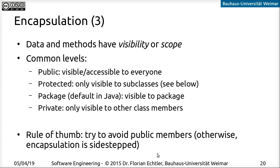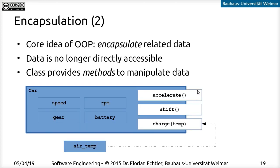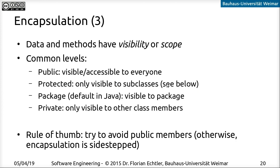It's also important to keep in mind that each data and method item has so-called visibility or scope — that is, who can access it. There are usually four levels in Java. An item can be public, which is usually a good idea for methods, since looking back at encapsulation the methods should be accessible from outside so we can manipulate the data through them. On the other hand, data items should usually not be public, because otherwise everybody could manipulate them from the outside and the whole point of encapsulation would be lost.